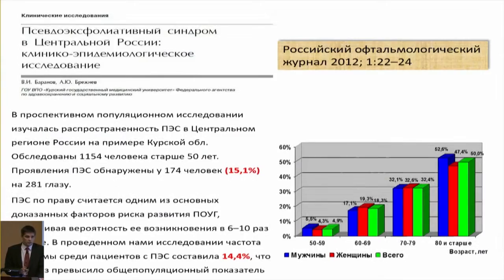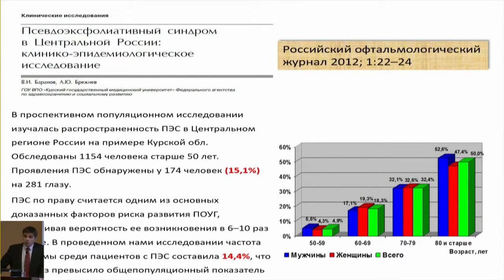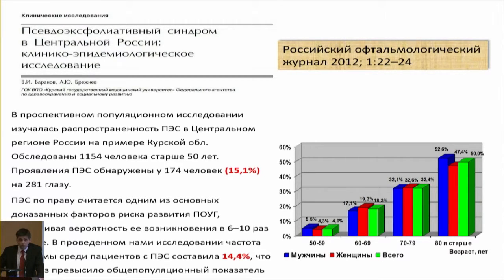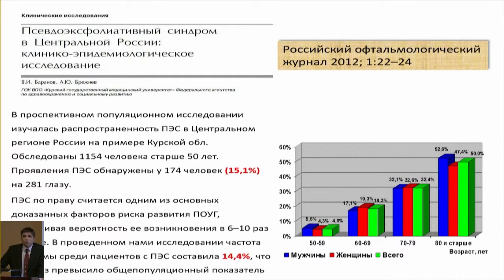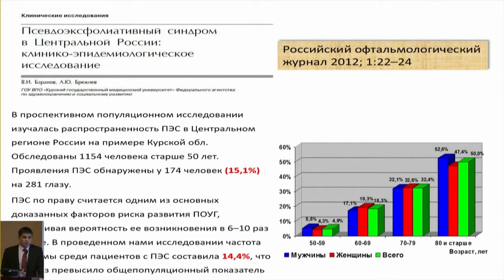Keeping in mind that this is age-associated pathology, the number of patients is constantly increasing. In patients 50-plus in the territory of Central Russia, the Kursk region, the prevalence of pseudo-exfoliative syndrome is about 15%, and in patients 80-plus we see pseudo-exfoliative process in every second case. The rate of glaucoma is increased six to ten times in pseudo-exfoliative syndrome, and 20 times higher versus the general population.